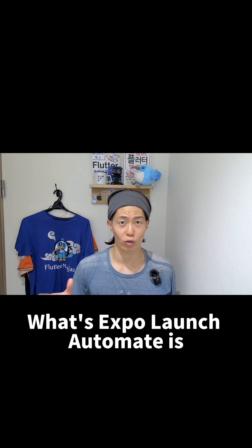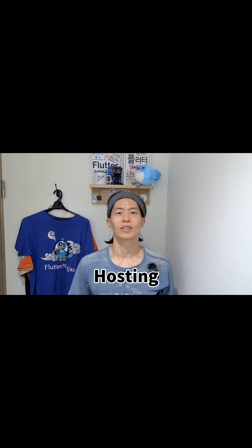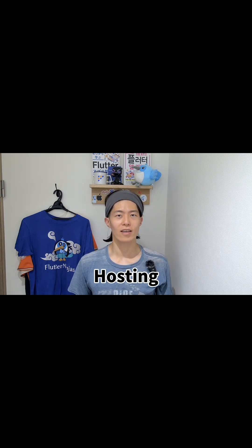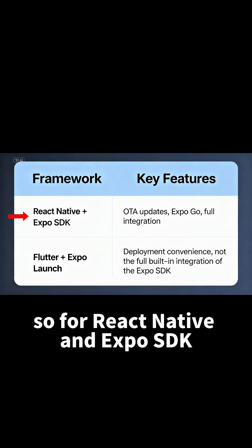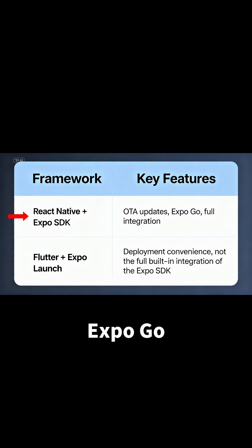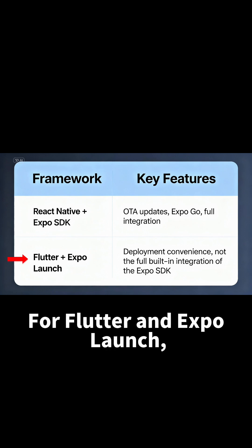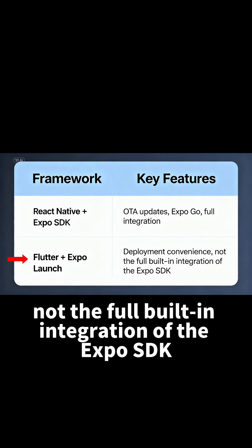What Expo Launch automates is the CI/CD, hosting, and submission pipeline. So for React Native and the Expo SDK, you might have features like OTA updates and Expo Go. For Flutter and Expo Launch, you get deployment convenience — not the full built-in integration of the Expo SDK.